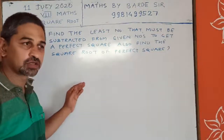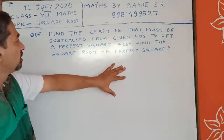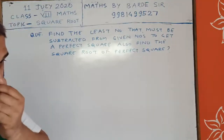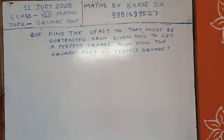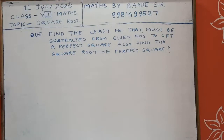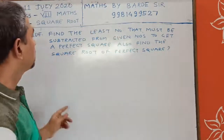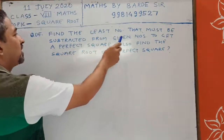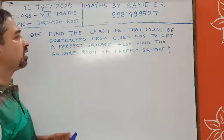Good morning students. In the last class we learned the long division method to find out the square root of a number. Today we are going to discuss what must be the least number that must be subtracted from a given number to make it a perfect square, and also find out the square root of the perfect square so obtained.